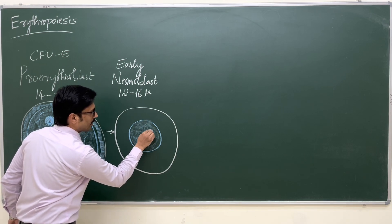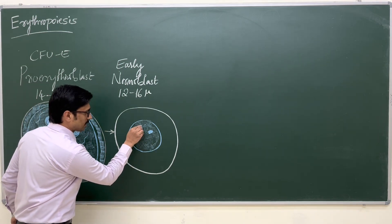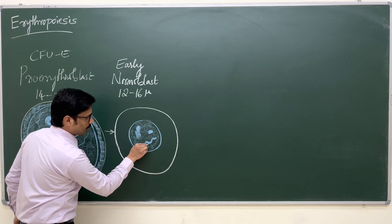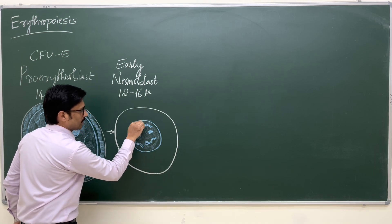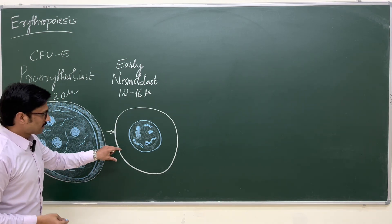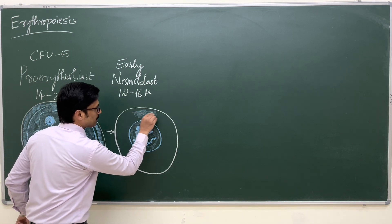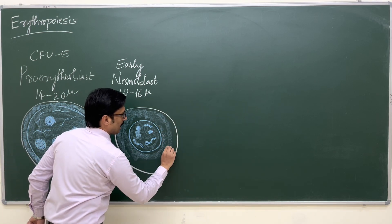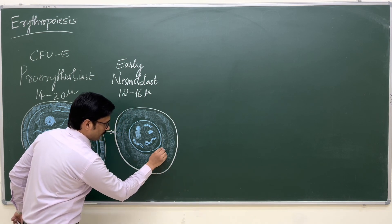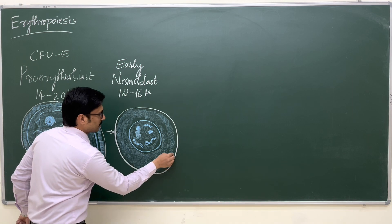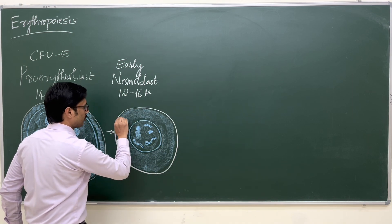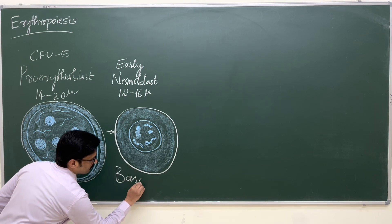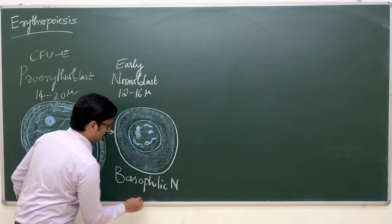In the early normoblast, the nucleoli are getting disappeared — hardly any nucleoli are seen. The chromatin is getting condensed from fine to coarse, thick chromatin fibers. The cytoplasm is of more volume and deeply basophilic, containing ribosomes and ribosomal RNA. Because of this, the early normoblast is also called the basophilic normoblast.